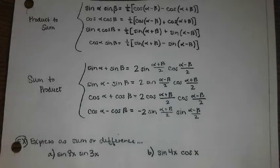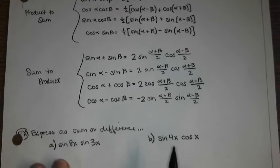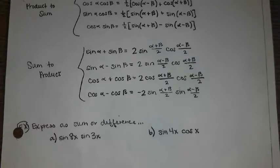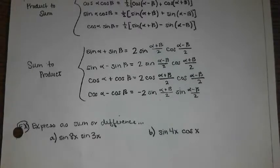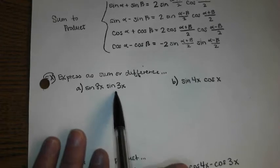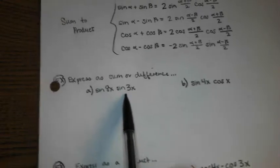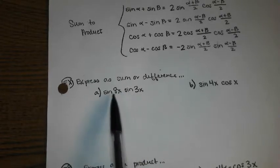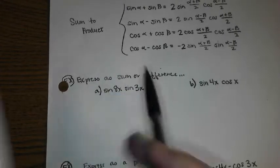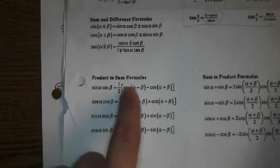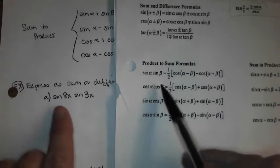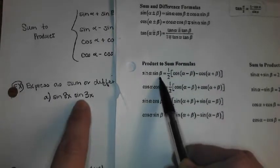So we are just going to really use the whole maze and puzzle of these formulas to take a product, like in part A, and write it as a sum or a difference. So this one is sine times sine, so it's currently a product. So we're going to use our product to sum and we're going to look for the one that's sine times sine, which is the first one.